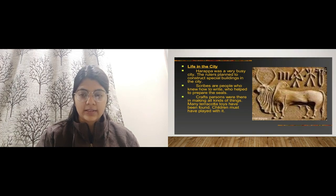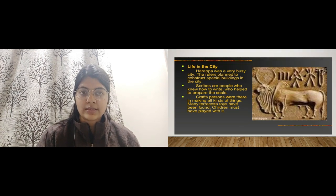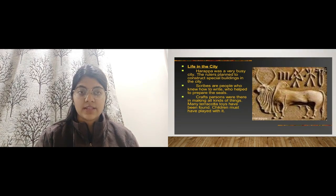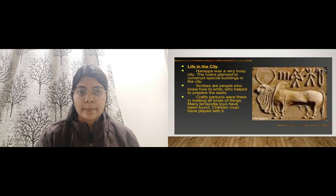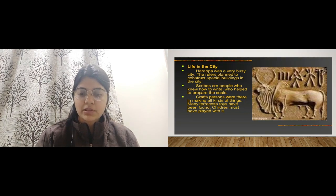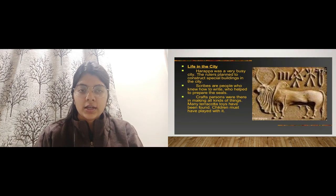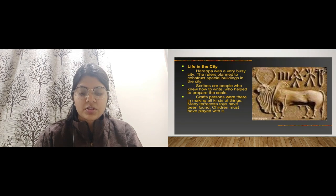Harappa was a very busy city. The rulers planned to construct special buildings in the city. Scribes — people who knew how to write — helped to prepare the seals. As seen in the picture, they would write and deliver documents from place to place.